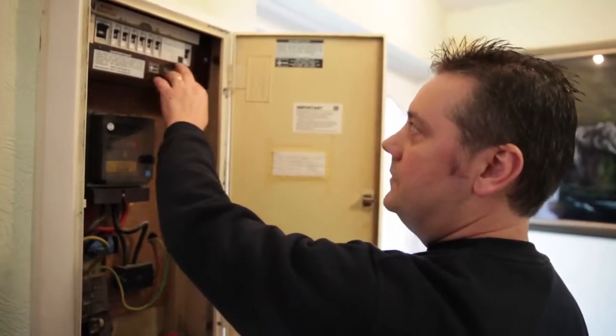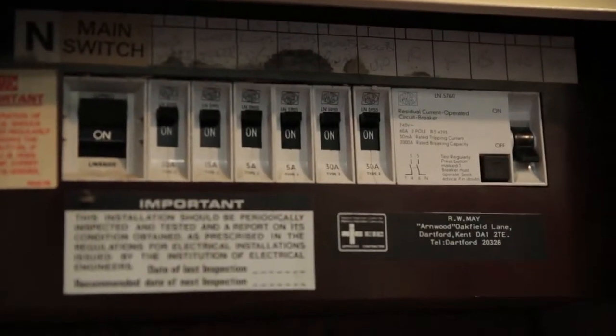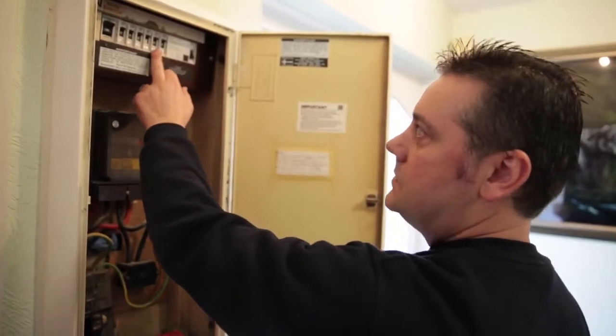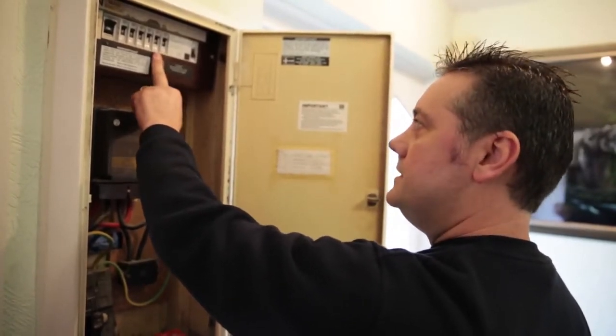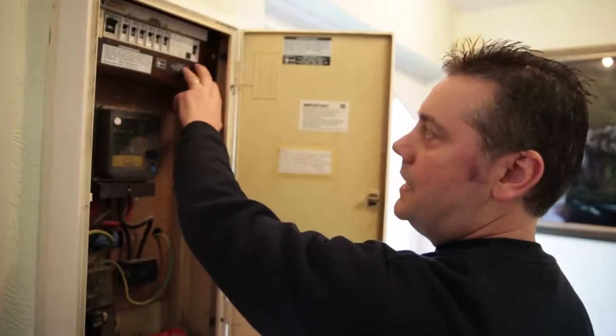If in the event of the RCD tripping out, it will trip out like that, which will isolate the upstairs and downstairs sockets. To reset it, you just need to push it back up, and it should come back on.